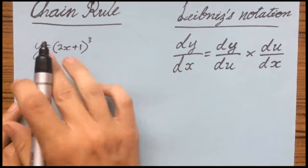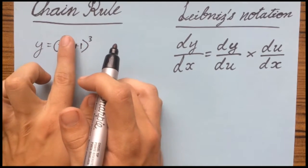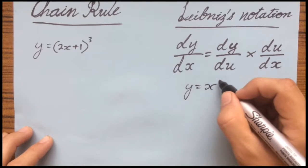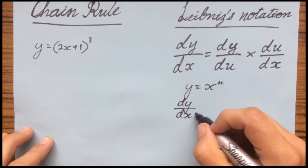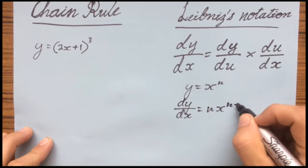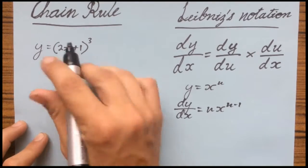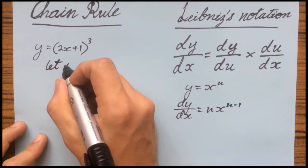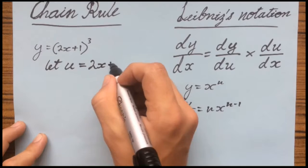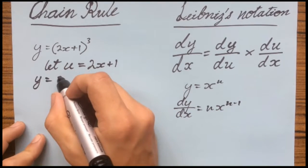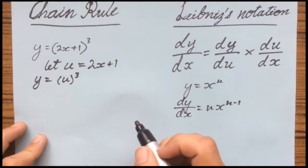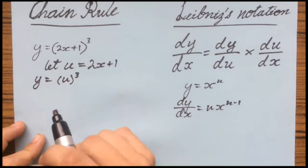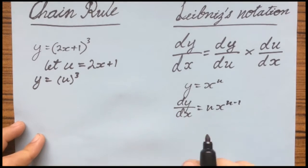If you cover the inside, it looks like the power rule — as you know from a previous video. So what you do is make this look like the power rule. We'll grab the inside and let u equal 2x plus 1. So we can rewrite this as u to the power of 3, because we're just substituting u for that expression, which makes it a lot easier since it now looks like the power rule.